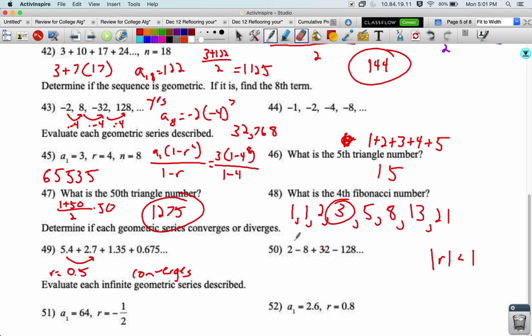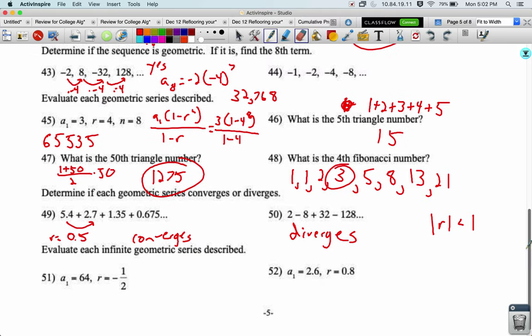Here the r value is negative 4, so this one diverges because the absolute value of negative 4 is 4. 4 is not less than 1, so this one diverges. It's going to become bigger and bigger, further and further away from 0. It'll never converge to a single number the way this one will.